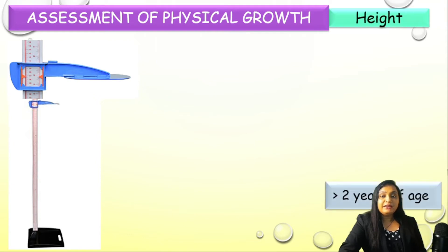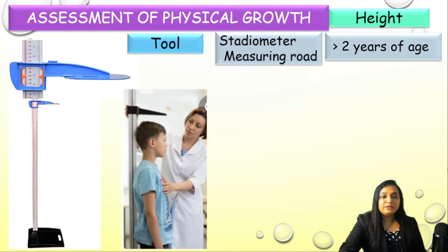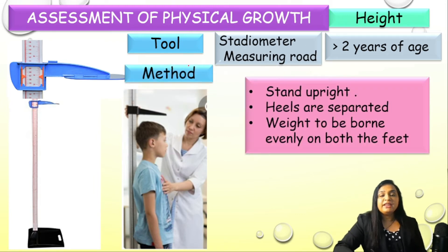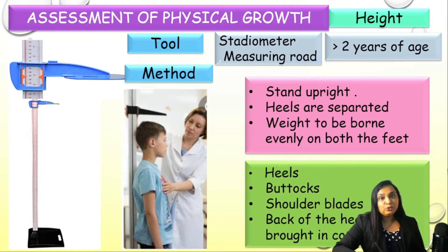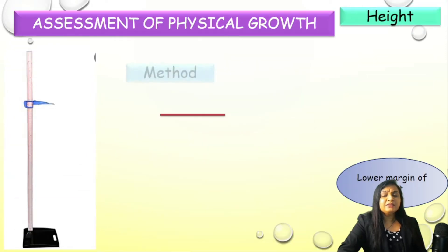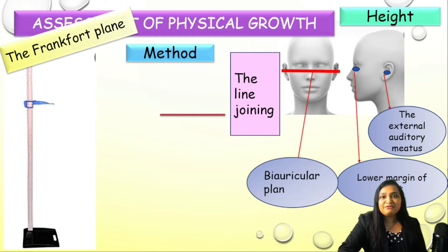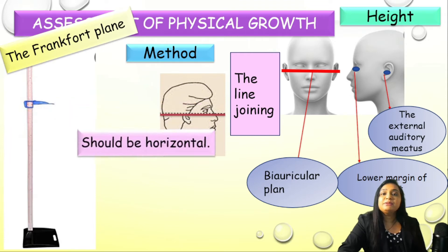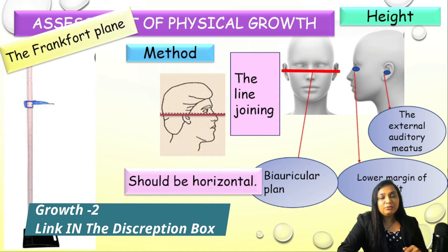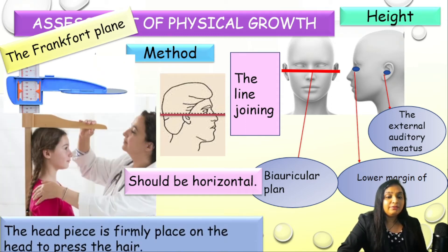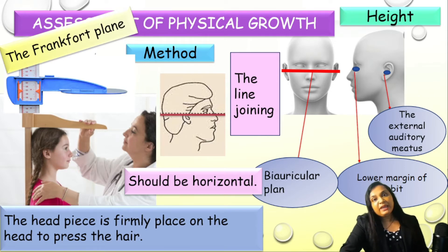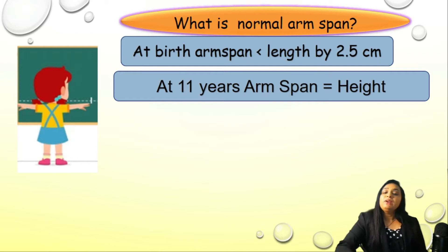After taking arm span, we need to take the height of the child. If the child is more than two years of age, we use a stadiometer or measuring rod. The child stands upright with feet separated, weight borne equally on both feet, and heels, buttocks, and shoulders in one alignment. The back of the head is brought in contact with the stadiometer, maintaining the Frankfurt plane. The headpiece is firmly placed on the head to press the hair, and then the measurement is taken.